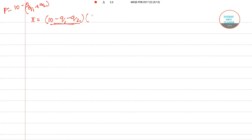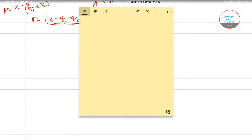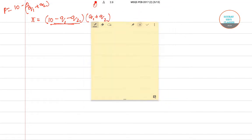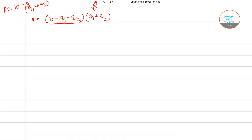Profit equals total revenue minus total cost. Total revenue is price times quantity, so it is (10 minus q1 minus q2) times (q1 plus q2). We then subtract the cost functions: minus (300 plus q1 squared) for plant 1 and minus (200 plus q2 squared) for plant 2.